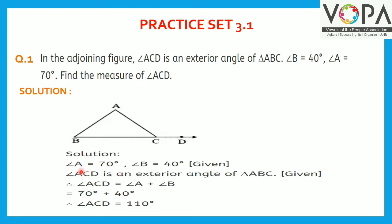The solution is: angle A is equal to 70 degrees and angle B is equal to 40 degrees — these are given. You know that angle ACD is an exterior angle of triangle ABC. By the property that the measure of an exterior angle of a triangle is equal to the sum of its remote interior angles, angle ACD equals angle A plus angle B, that is 70 plus 40, which equals 110 degrees.